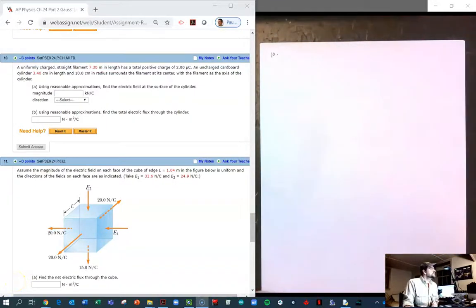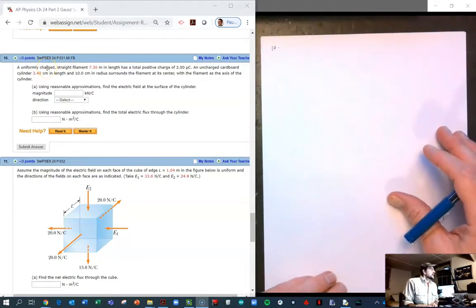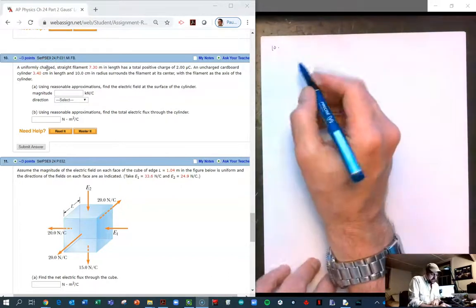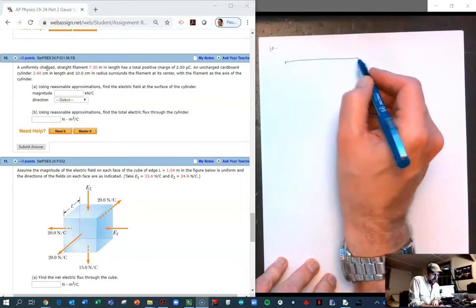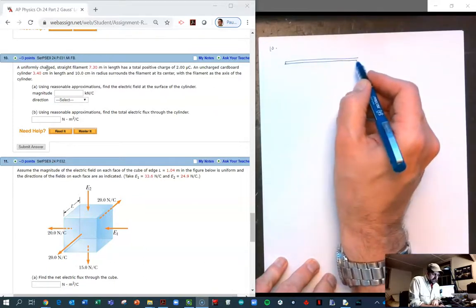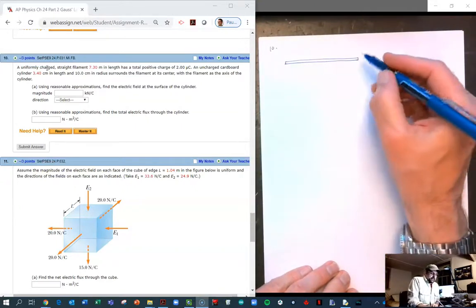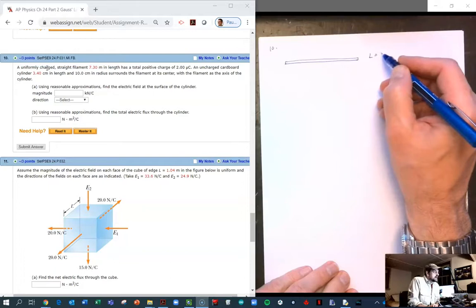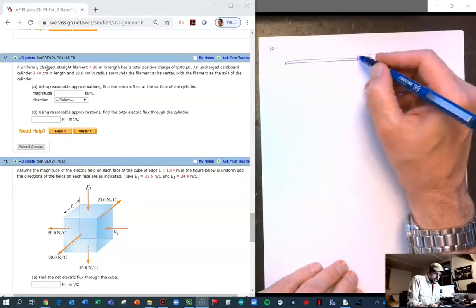This is number 10 in website number 31, chapter 24 of Serway and Jewett, ninth edition of the Physics for Scientists and Engineers textbook. Here we're asked to look at not an infinite but a finite long thin rod.